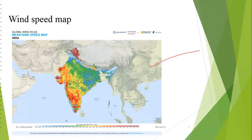The wind speed map of India shows that the red-colored areas have very high wind energy resources. Tamil Nadu, Karnataka, Gujarat, and Rajasthan are the states with very high wind velocity throughout the year. Tamil Nadu and Gujarat have utilized this most. India's largest wind power generating state is Tamil Nadu, with more than 8,000 MW from wind energy resources.